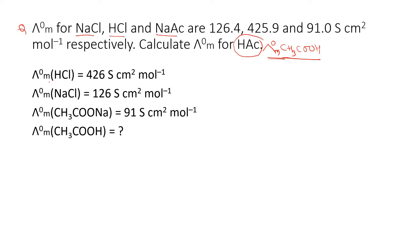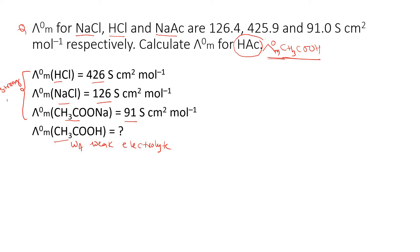The given limiting molar conductances are: HCl = 426, NaCl = 126, and sodium acetate = 91. They are asking us to find the limiting molar conductance of acetic acid, which is a weak acid and therefore a weak electrolyte.